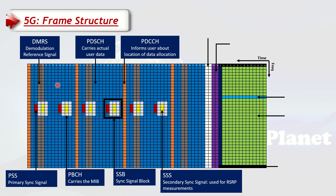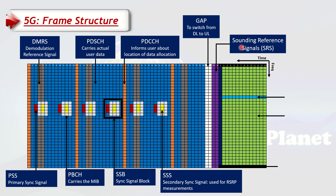When we shift from downlink to uplink we need a guard gap — a period where nothing is transmitted — so the 5G site can switch from transmitter to receiver mode and the UE can switch from receiver to transmitter mode. After that gap, we put a couple of symbols for the SRS — Sounding Reference Signals — which are used to estimate uplink channel quality. Because in TDD the channel is the same in both directions, the SRS can also be used to estimate downlink channel quality.